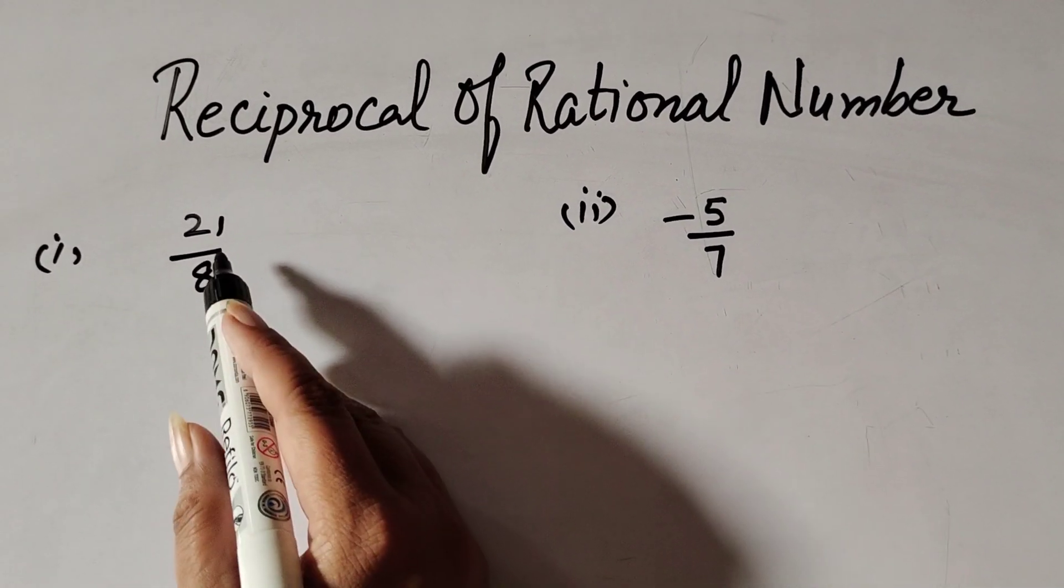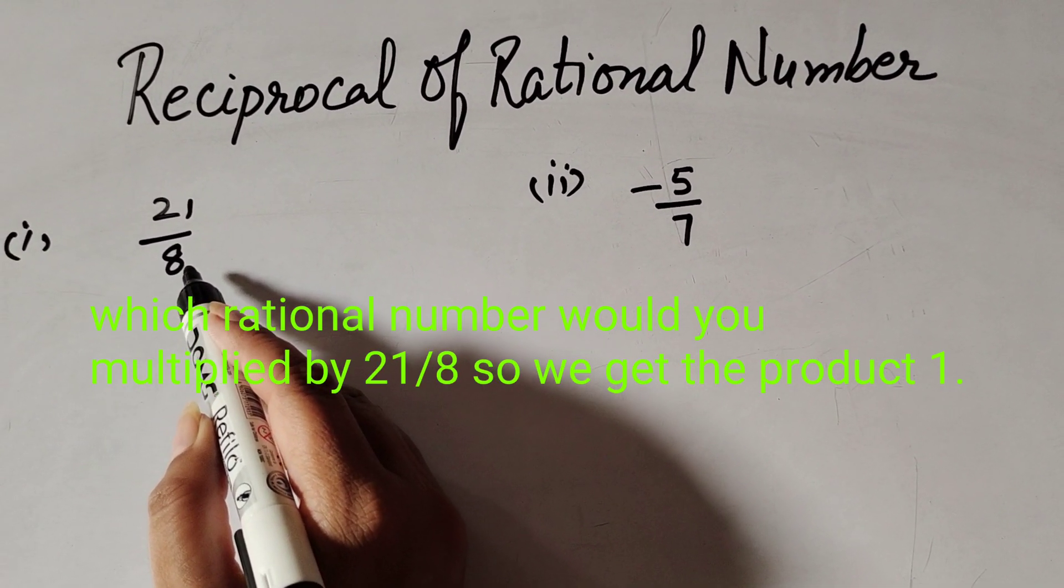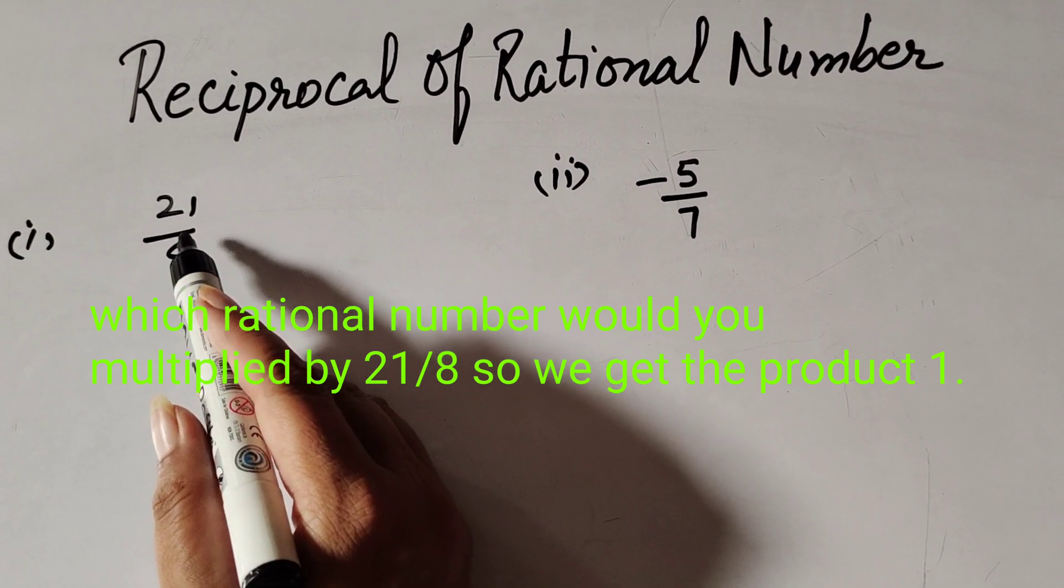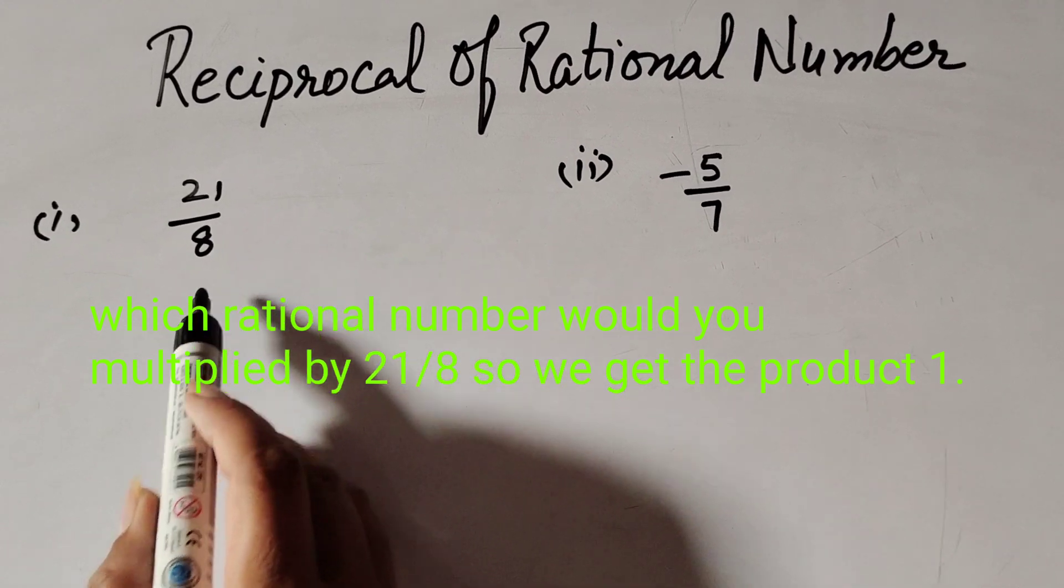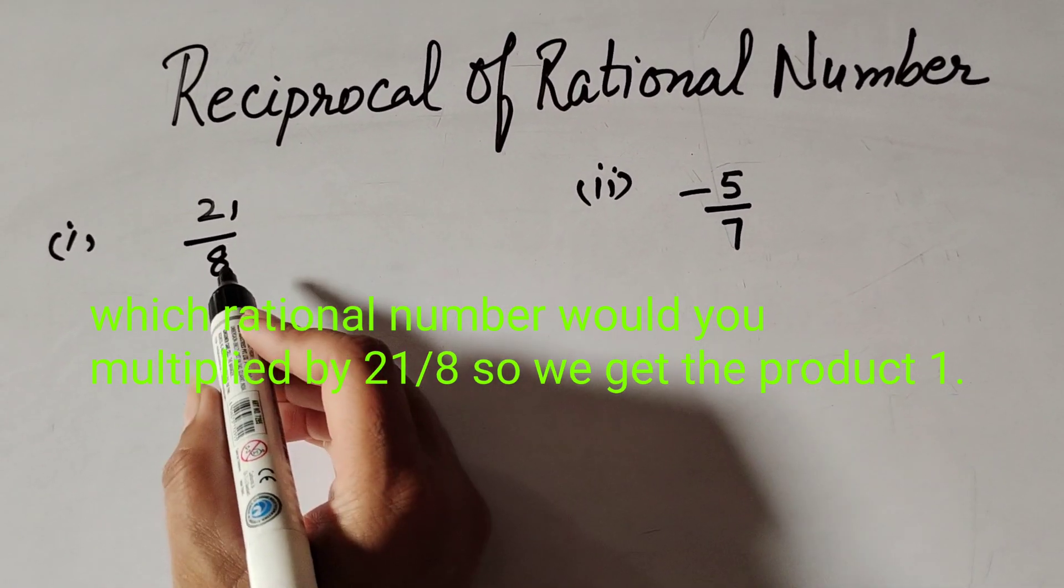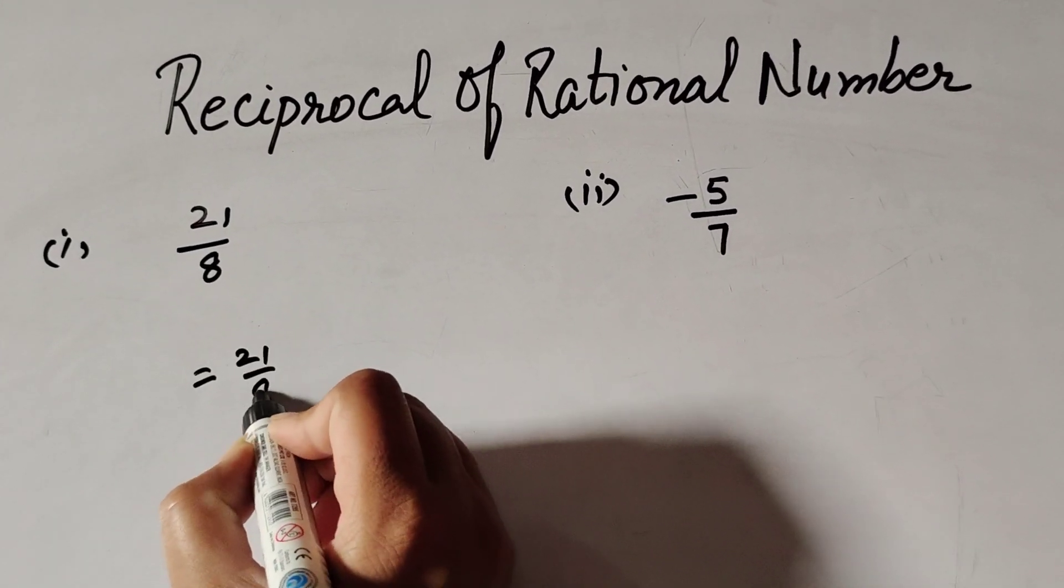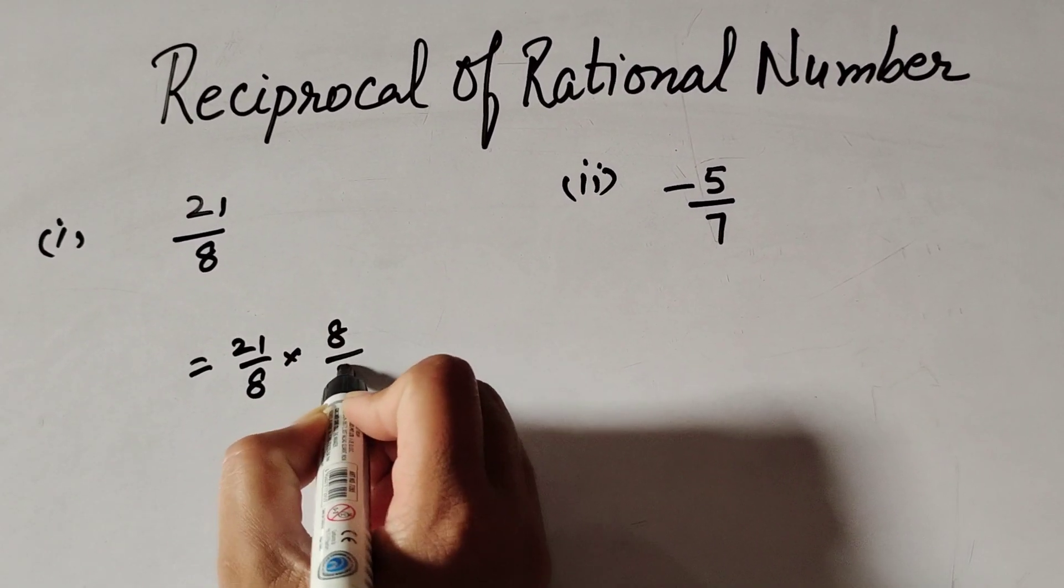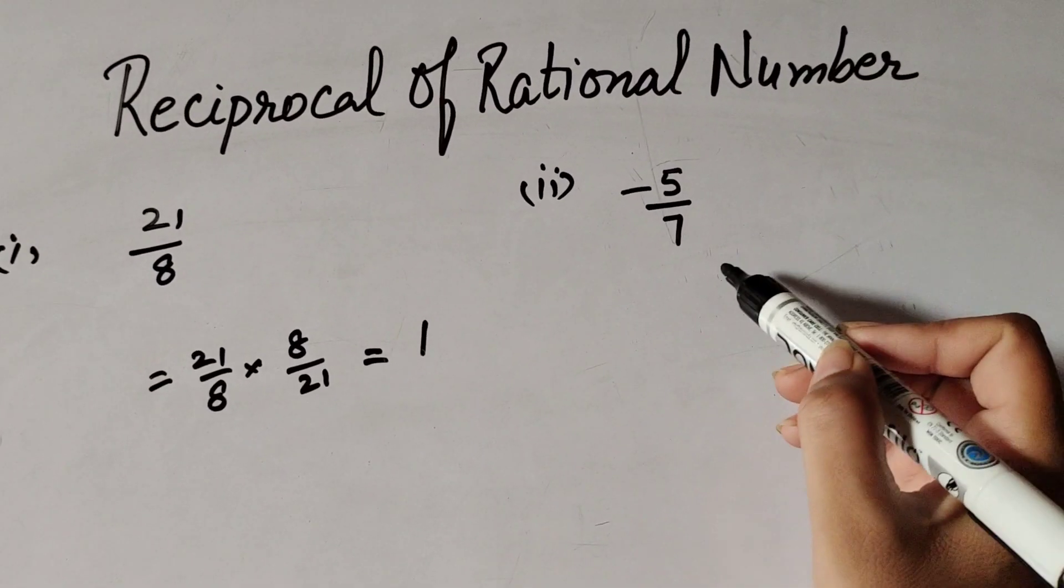For example, we have number 21 over 8. It is a rational number. So we have to find another rational number that is multiplied by this number so we get the product of these two numbers is 1. Obviously, the number that is multiplied by 21 over 8 is 8 over 21. So when we multiply these two numbers, we get the answer 1.